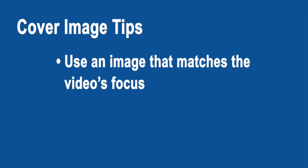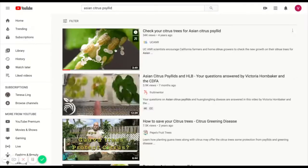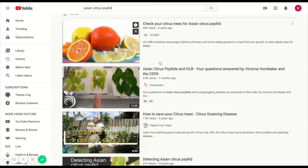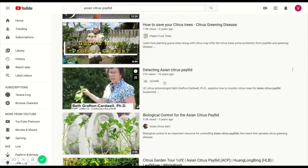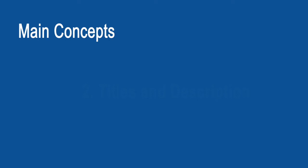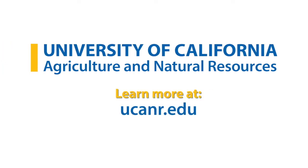And last, be sure to use a good cover photo. Two tips on that: first, choose an image that shows in one picture what the video is about. Secondly, add a few words of text to reinforce that message — just a short version of your title works great. In our citrus psyllid example, we see that the top scoring video doesn't have text, but the second most popular video from UC ANR does it well for their 'Detecting Asian Citrus Psyllid' video. And that's it. If you follow these three key strategies, it will help people find your videos and also learn more about everything else UC ANR offers. Thanks for watching.